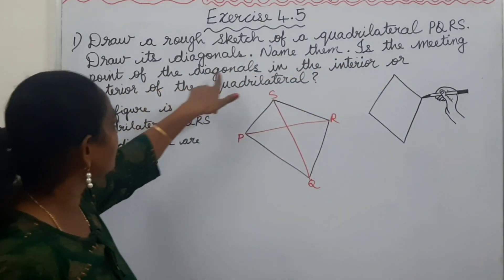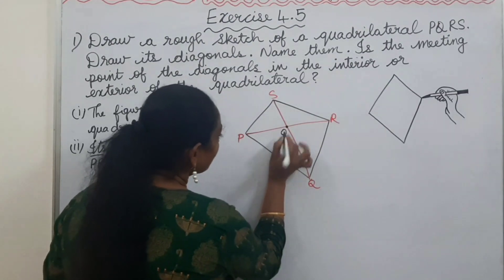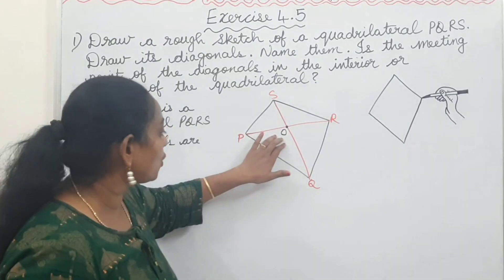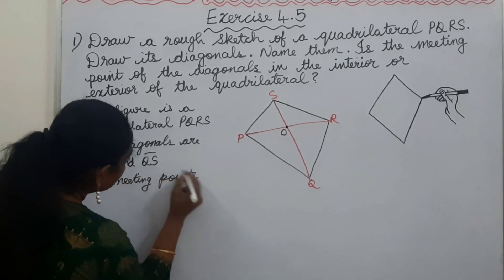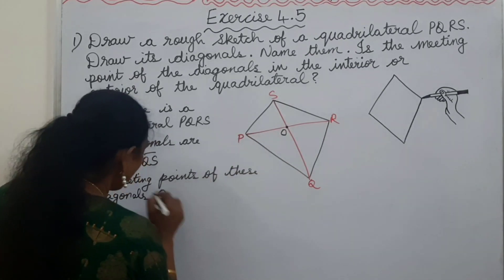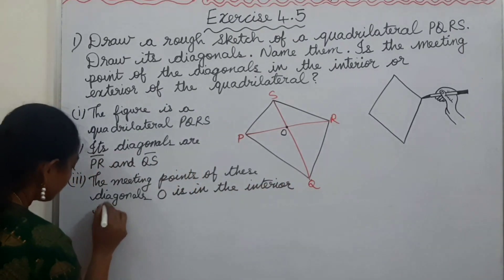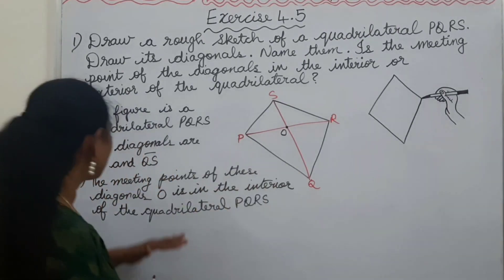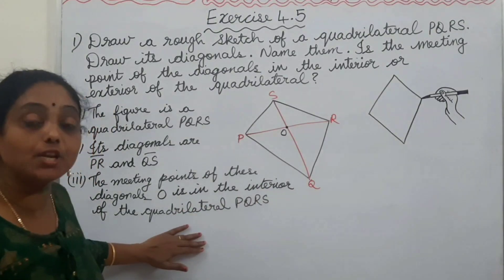Third part: Is the meeting point of the diagonals in the interior or exterior of the quadrilateral? The diagonal meeting point we name as O. Ye jo diagonal meeting point hai, wo interior mein hai. The meeting point of these diagonals O is in the interior of the quadrilateral PQRS. So O is in the interior, not the exterior.